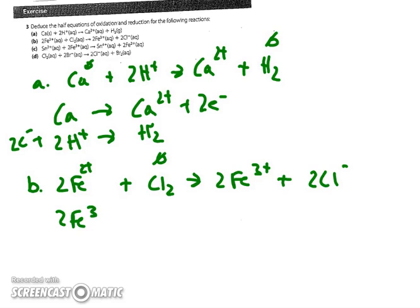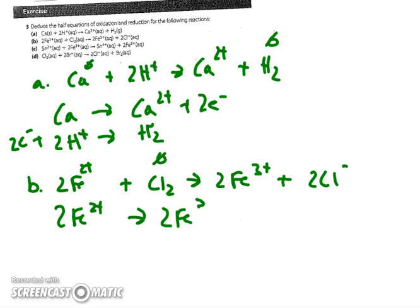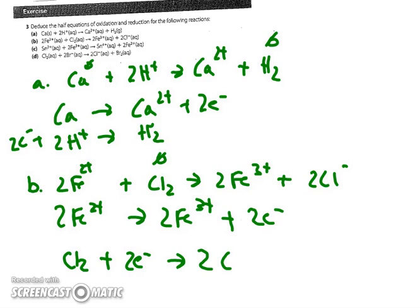The second one: 2Fe 2+ is becoming 2Fe 3+, so I need two electrons on the more negative side, whereas Cl2 is going to gain two electrons to become 2Cl minus ion.